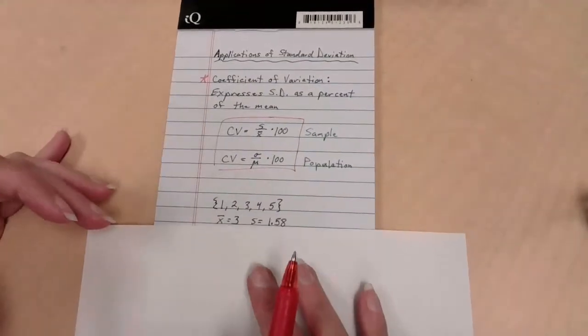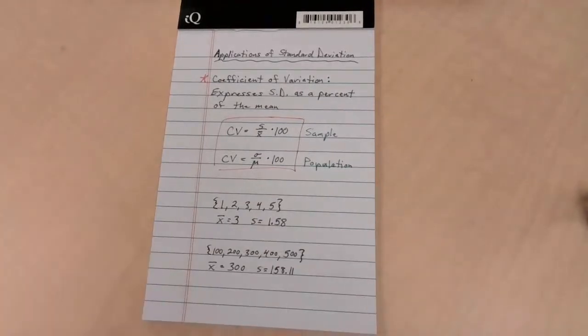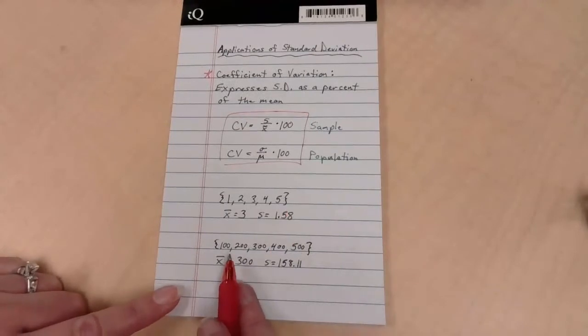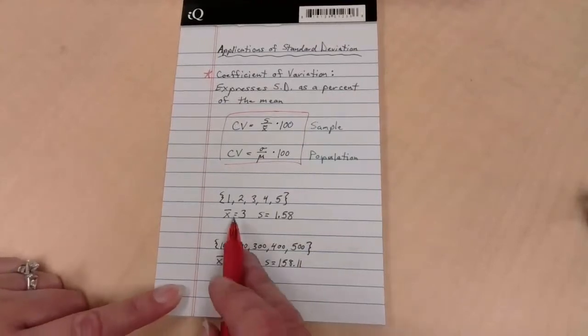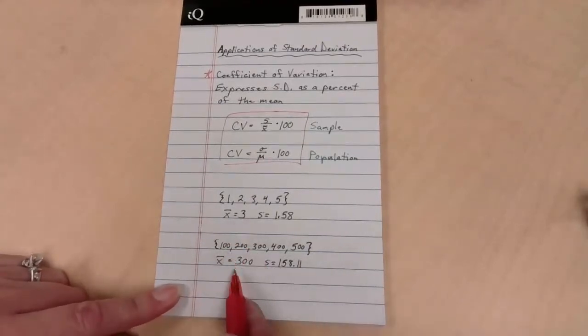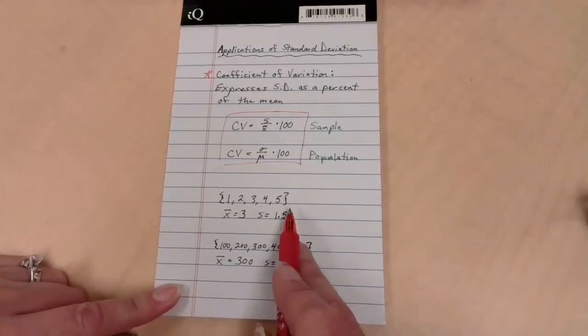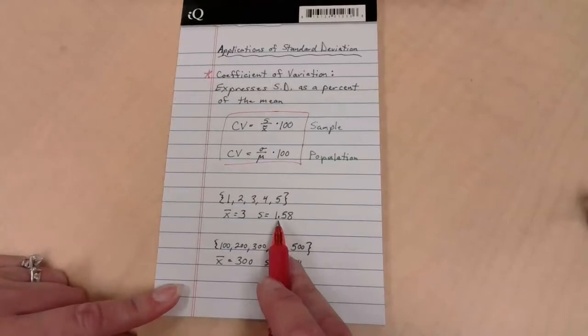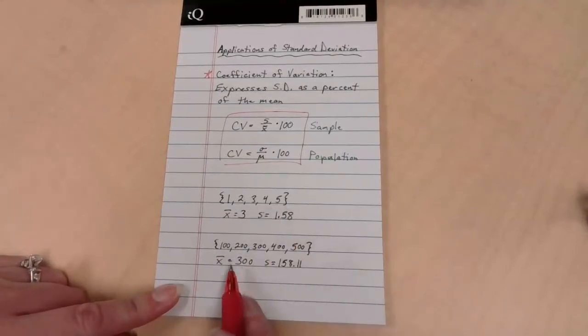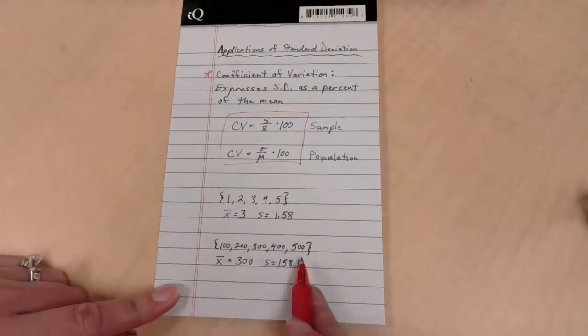What I've created for us here is two sets of numbers: 1, 2, 3, 4, 5 and 100, 200, 300, 400, 500. As you can see with the data that's been collected so far, they have very different means. This one is 3, this one is 300. They have very different standard deviations. The standard deviation for our first set is only 1.58. The total range here is only 4. This has a much larger standard deviation at 158.11. This is much more spread out, has a much larger standard deviation.